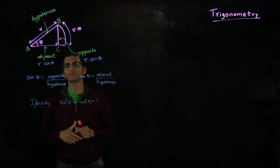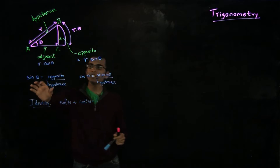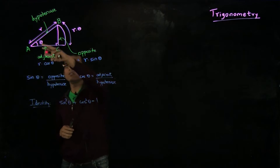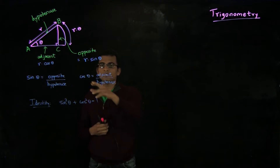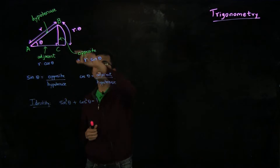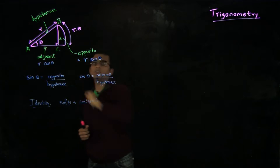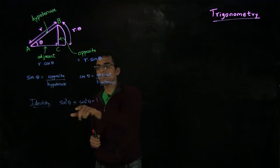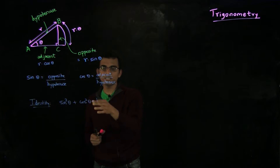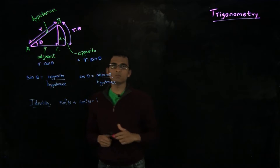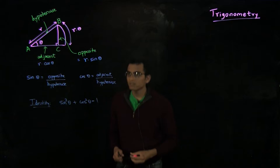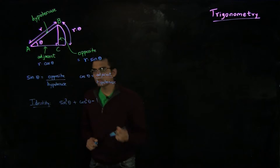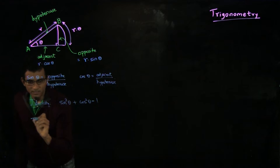So far, we saw that we defined sin theta as the opposite upon the hypotenuse of an angle, and we defined cos theta as the adjacent side divided by the hypotenuse. We saw the identity that sin squared theta plus cos squared theta for any angle is equal to 1, and it followed easily from Pythagoras' theorem.